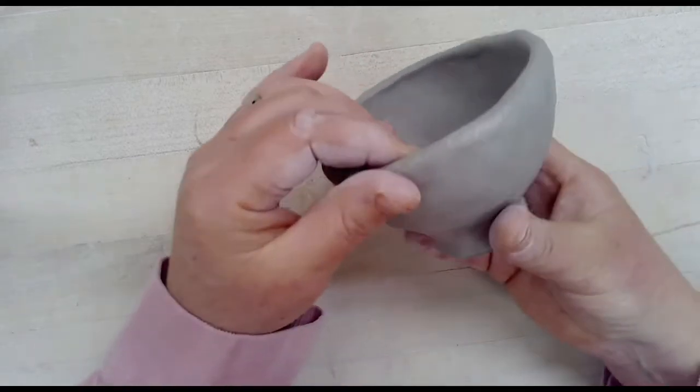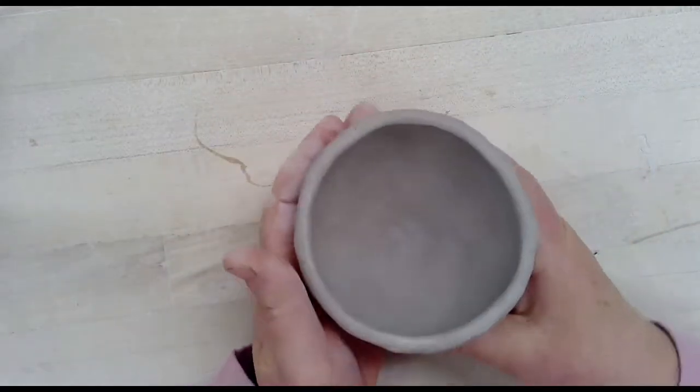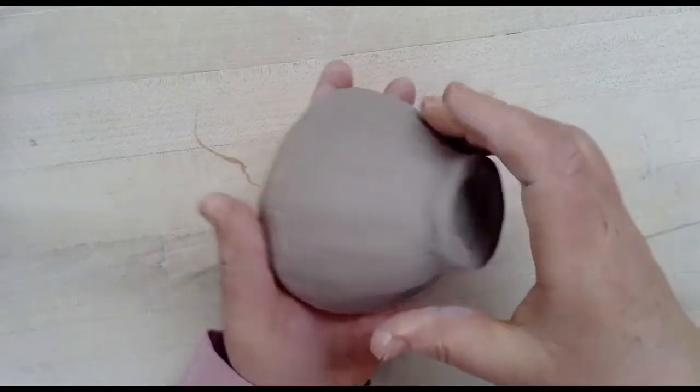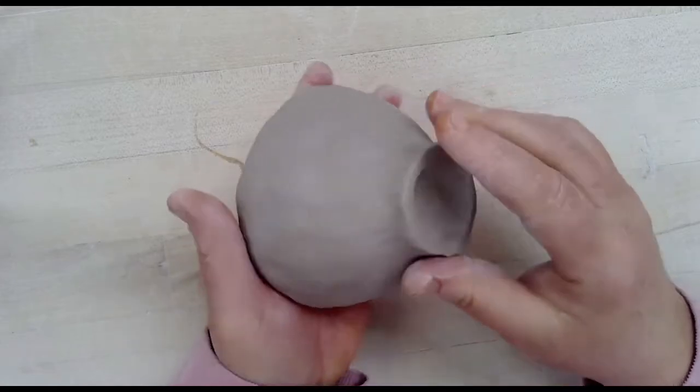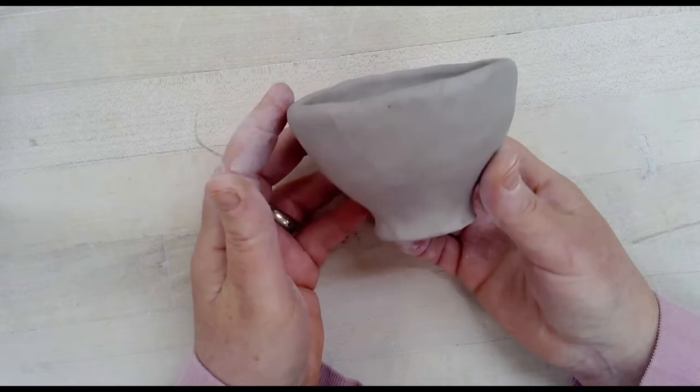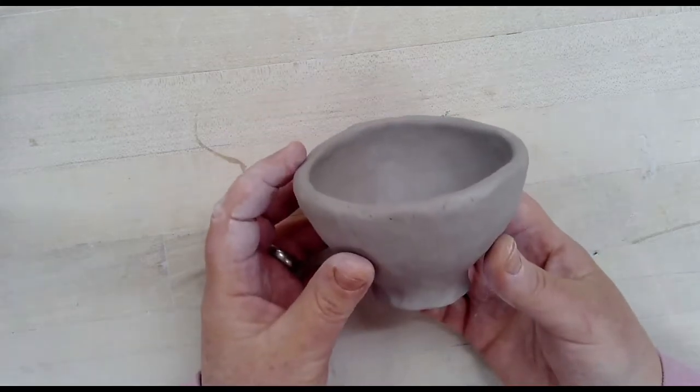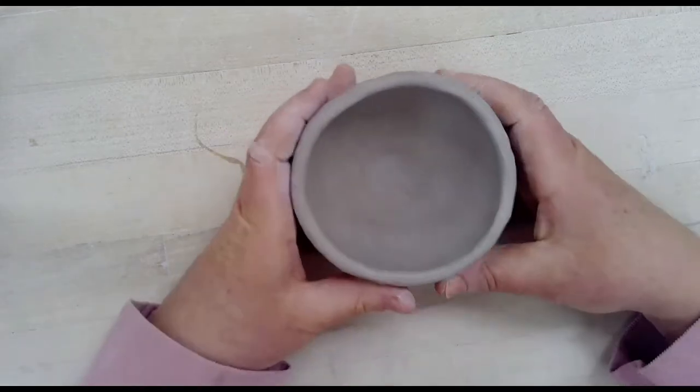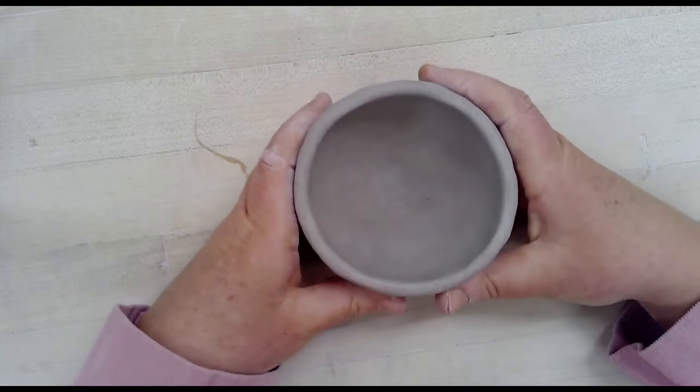In this video I'm going to show you a variety of ways that you can texture the tea bowl that you created in class through pinching. At this point you should have a pretty even bowl about a quarter of an inch thin walls, a foot ring attached that has been fully blended.